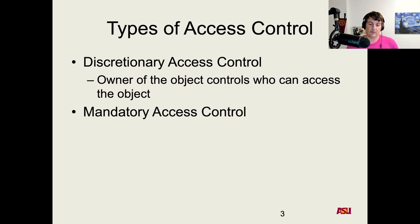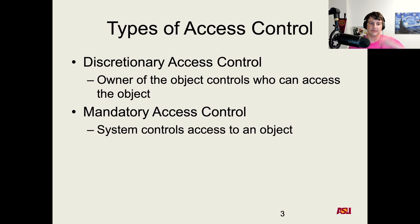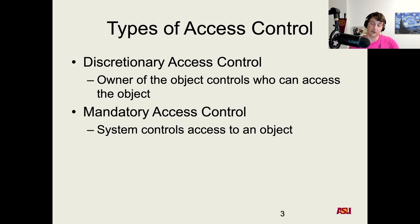This brings us to mandatory access control, or MAC, where the system controls who can access an object. For instance, in a mandatory access control system on that shared server, the system administrator — the professor — can have a mandatory access control policy that says no user can see anything in other users' home directories. It doesn't matter if you own a file; you cannot change that to make it visible to somebody else. The system itself controls that. There's actually a nice model that helps you think about how information can flow, and you can do theoretical proofs to prove that no information can leak from a system.